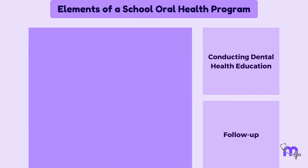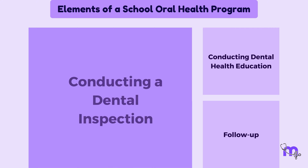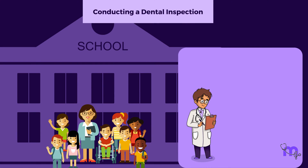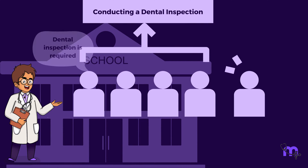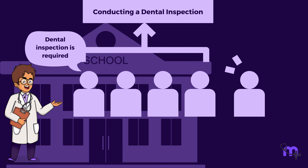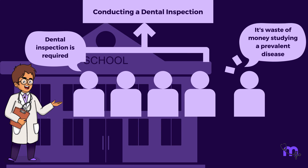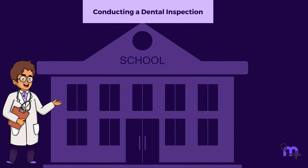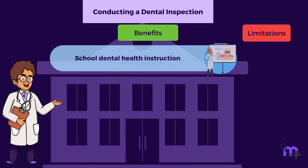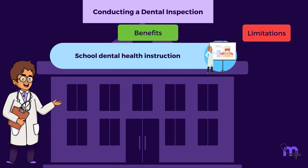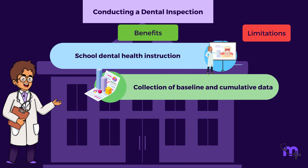The second component is conducting a dental inspection. A program of dental inspection is in question when the prevalence of dental disease among school children is determined to be 95% or higher. While the majority of the population supports it, some people believe that studying a disease that is almost universally prevalent would be a waste of money. Like any other program, this too has its benefits and limitations. This inspection serves as a basis for school dental health instruction, as well as helps with the collection of baseline and cumulative data for the evaluation of the school dental health programs organized.